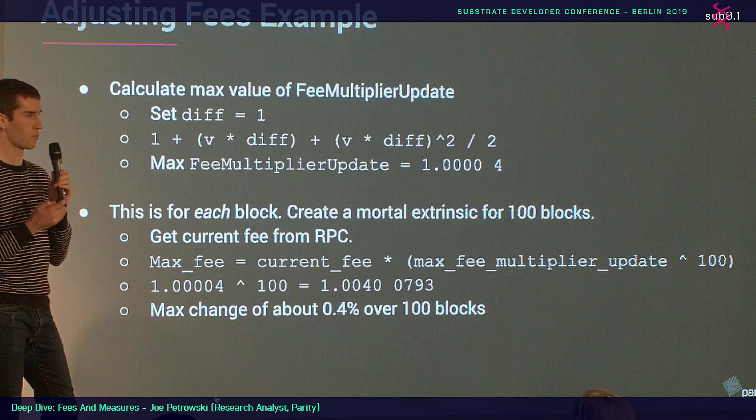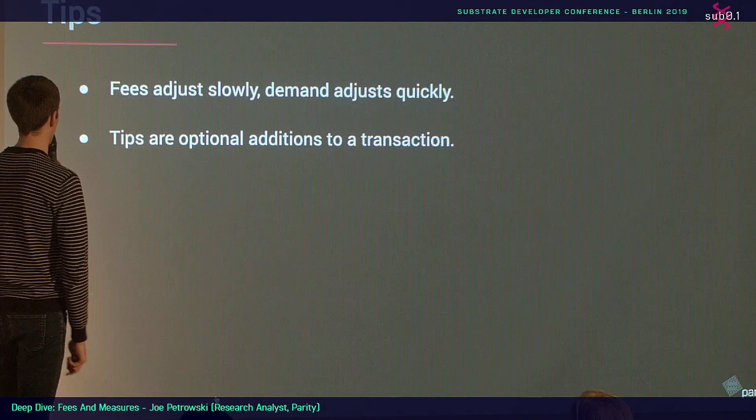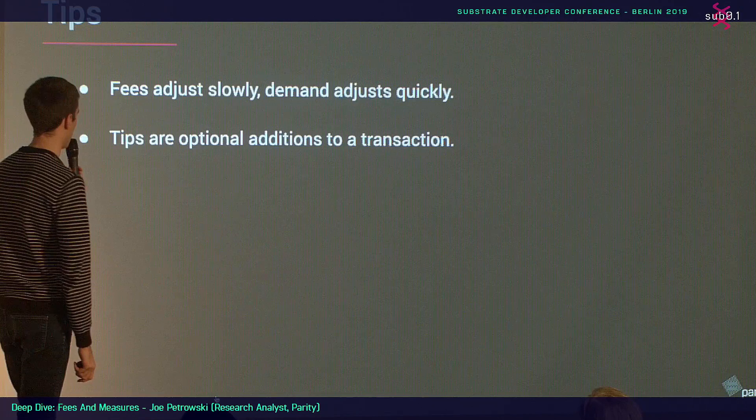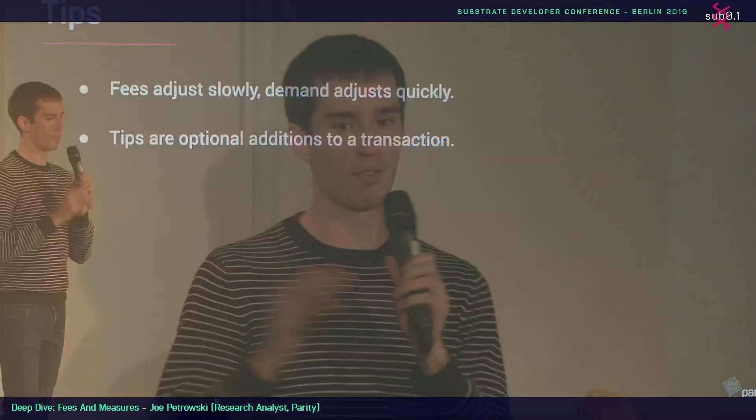Tips adjust slowly, demand changes quickly, and tips are optional — you don't have to add them. You can also decide what to do with the entire inclusion fee. In Polkadot's case, 20% goes to the block author and 80% goes to the treasury, but you can implement whatever distribution you want.